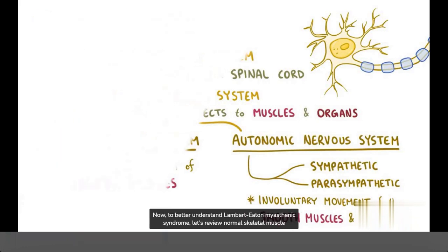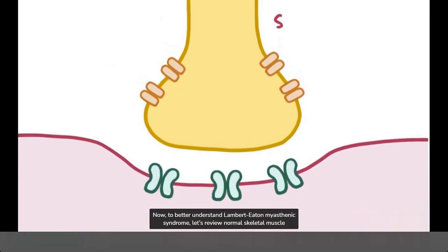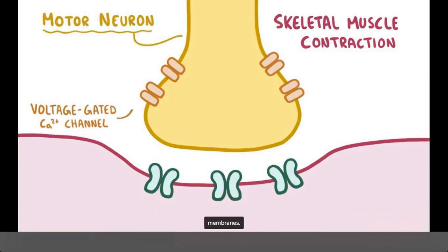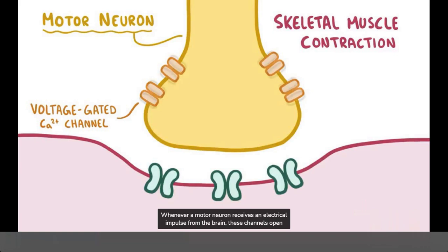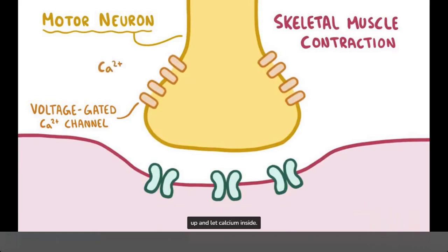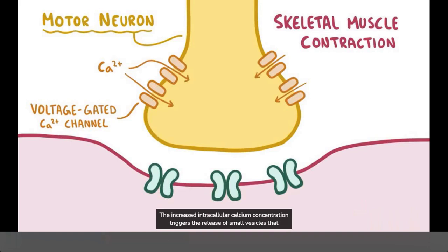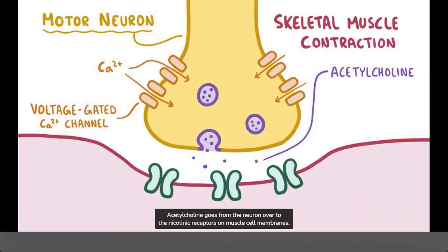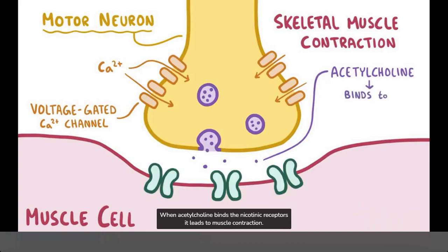To better understand Lambert-Eaton myasthenic syndrome, let's review normal skeletal muscle contraction at the cellular level. First, you've got your motor neurons, which have voltage-gated calcium channels in their membranes. Whenever a motor neuron receives an electrical impulse from the brain, these channels open up and let calcium inside. The increased intracellular calcium concentration triggers the release of small vesicles that contain the neurotransmitter acetylcholine into the neuromuscular junction. Acetylcholine goes from the neuron over to the nicotinic receptors on muscle cell membranes, and when it binds, it leads to muscle contraction.